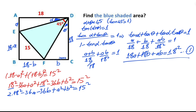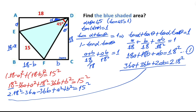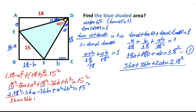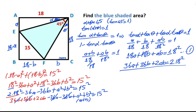Multiplying the first equation by 2: 36a plus 36b plus 2ab equals 2 times 18 squared. Substituting this value for 2 times 18 squared into the Pythagorean expansion, we get: a² plus b² plus 2ab equals 15 squared. Notice that a² plus b² plus 2ab is a perfect square, so (a + b)² equals 15 squared.